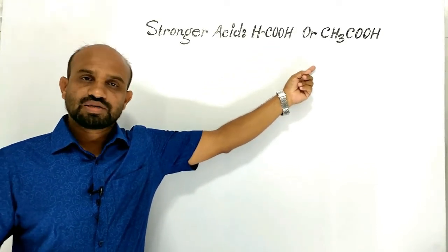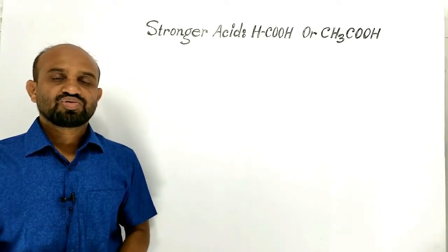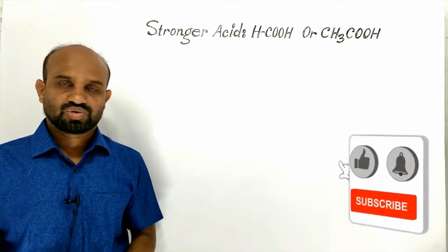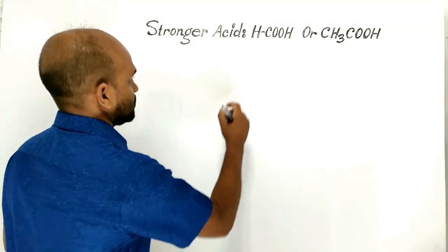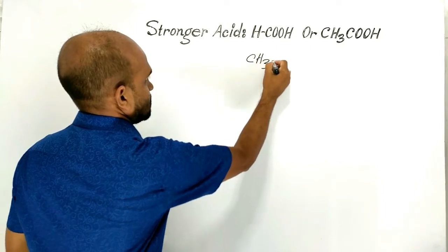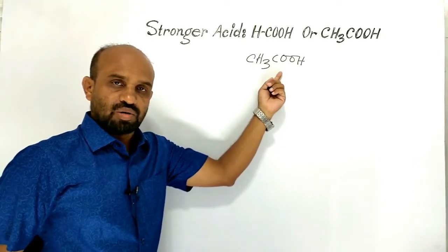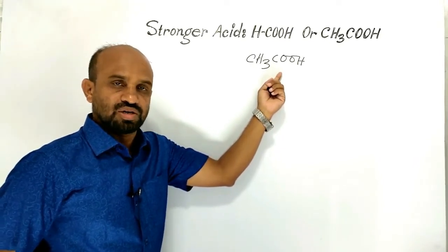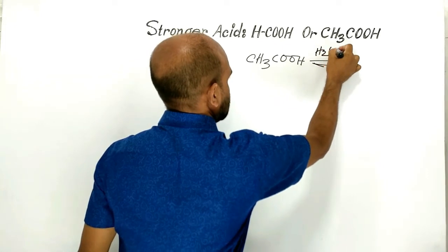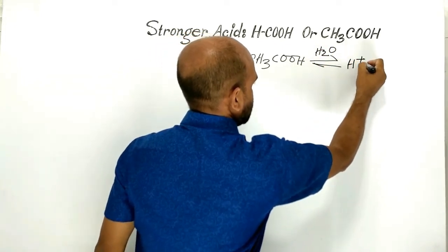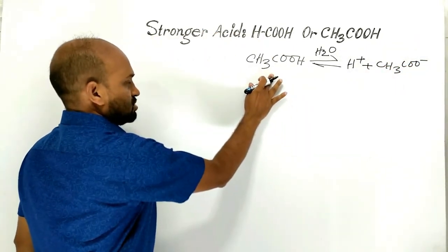Formic acid or acetic acid — which one is a stronger acid? This is today's lesson. Let's try to find the stronger one from these two. First of all, acetic acid is a kind of organic acid, a carboxylic acid, which is a weak acid that ionizes in water to form a proton and acetate ion.